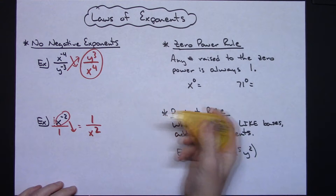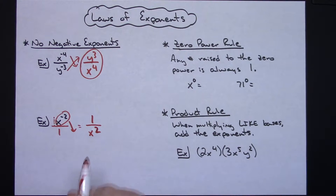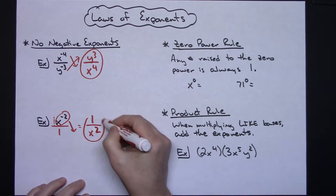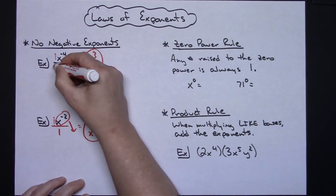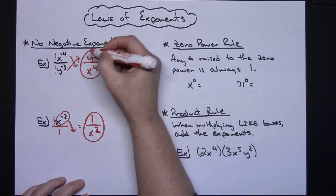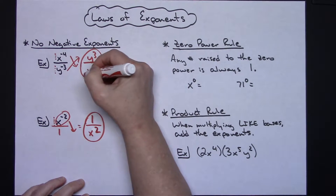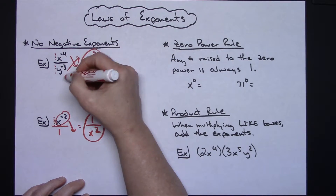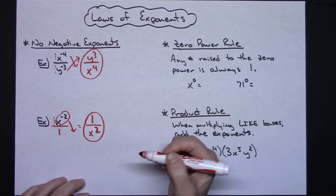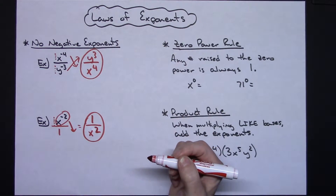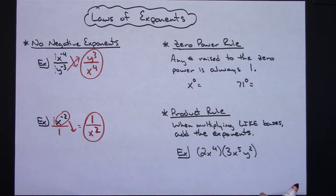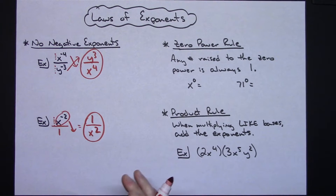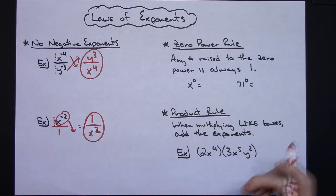Going back to look at that first example — there's the imaginary 1 there, and there's the imaginary 1 there. Those ones stayed put. The only thing that got moved was those bases with the exponents. That takes care of removing negative exponents in an easy way.